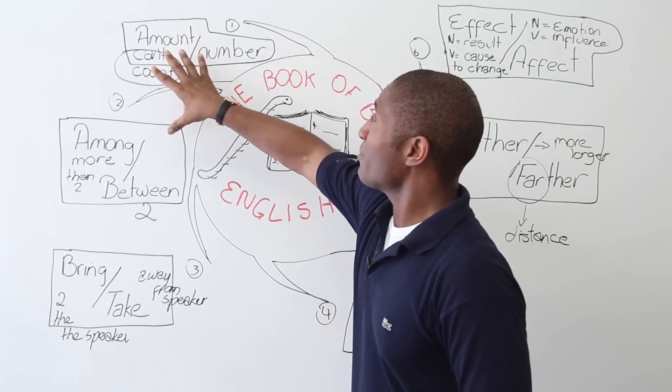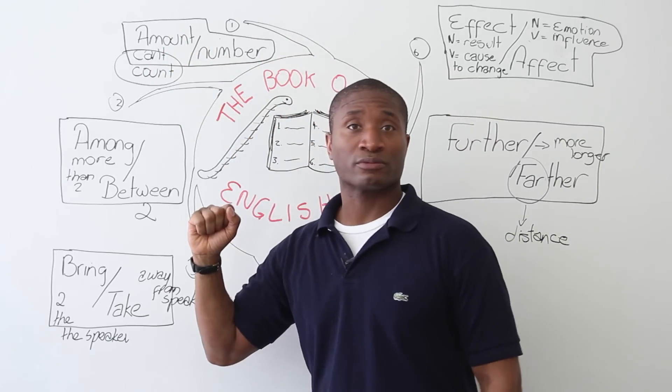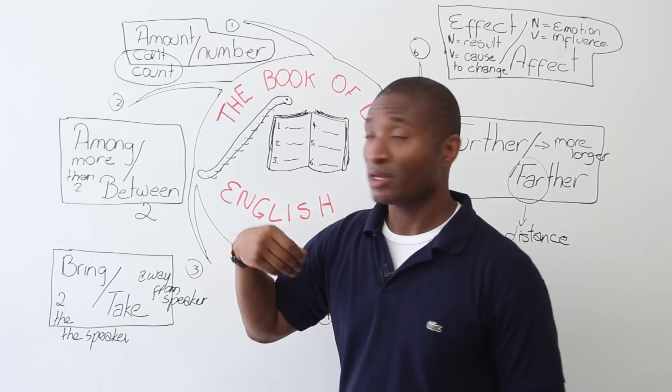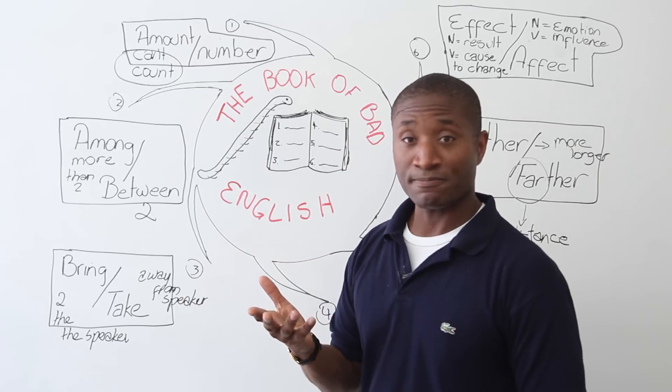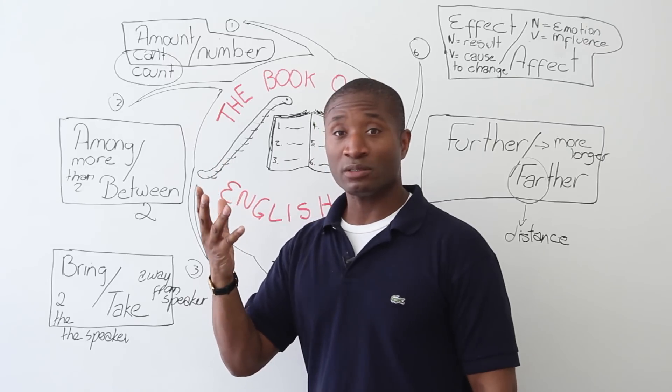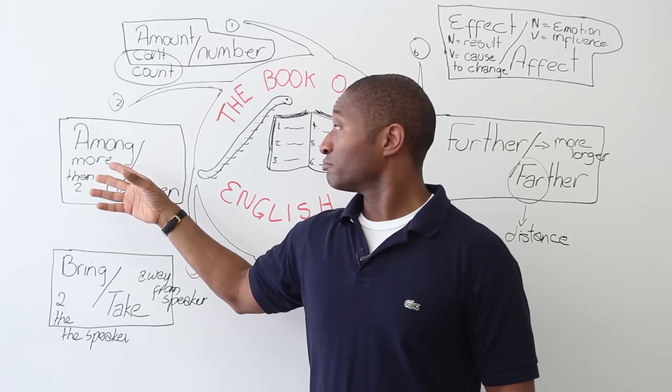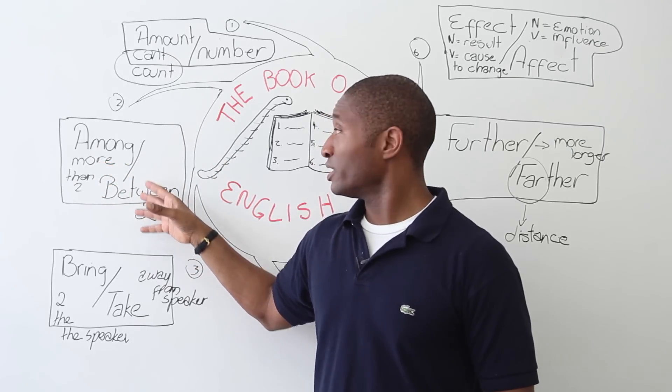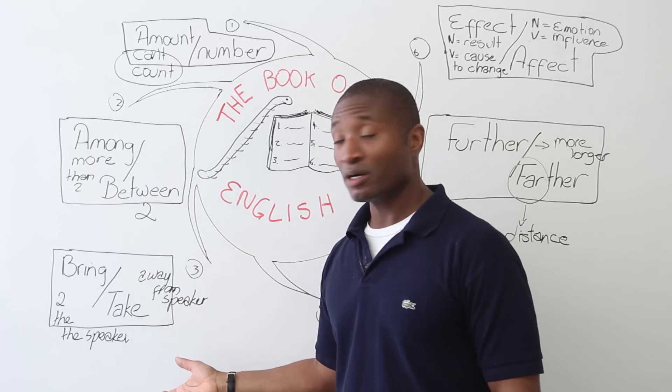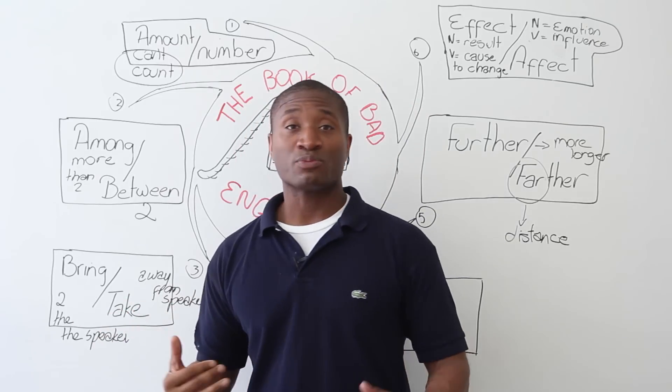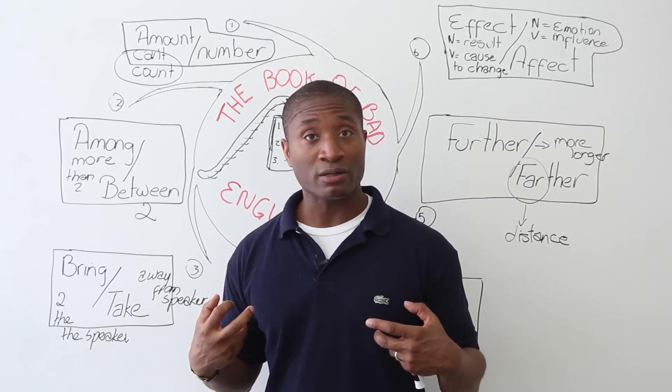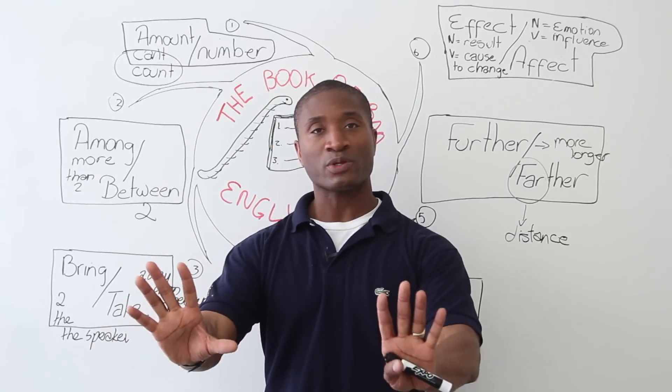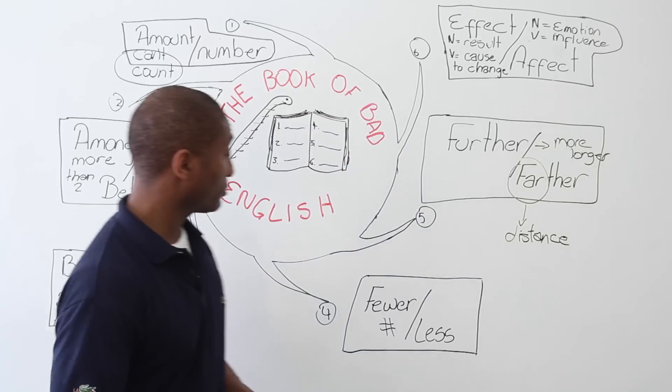Did I say affect or effect? Not sure. Okay. So let's go back over this quickly, because I don't know how much time I've got left, but I don't want it to affect the lesson. All right? So when we look at amount or number, you can't count amounts. Sugar, salt, water. Numbers you can. People. All right? Next, among and between. If you have two, you'd say between. If you have more than two, say among. Bring and take. If it's coming to the speaker, say bring. If it's moving away from the speaker, say take. Okay?